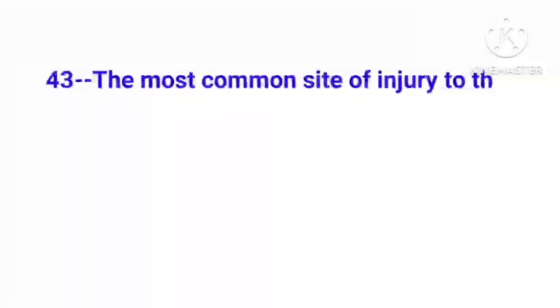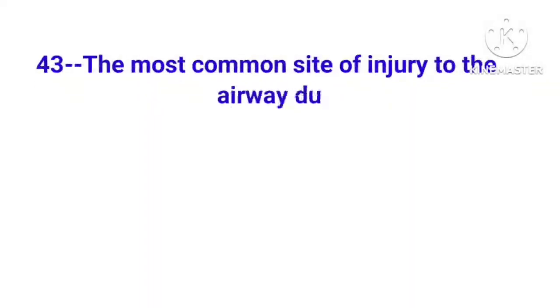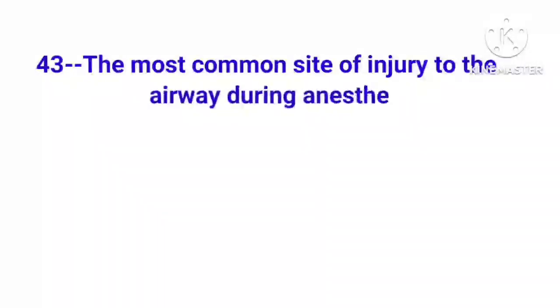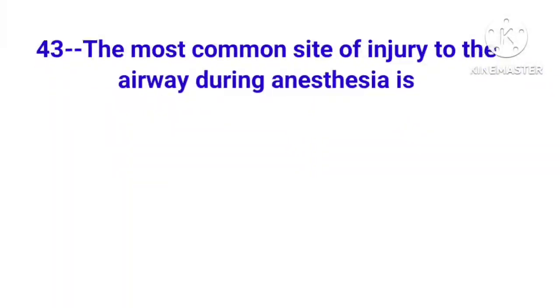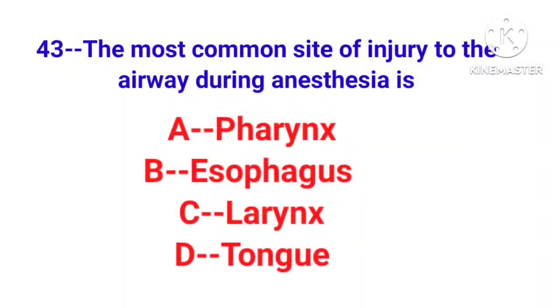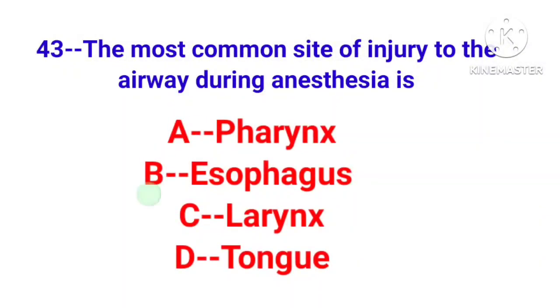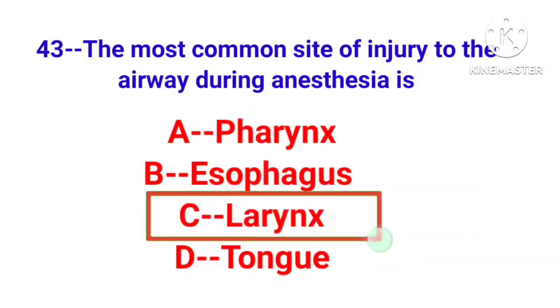Question number 43: The most common site of injury to the airway during anesthesia is. Correct answer is option C, larynx.